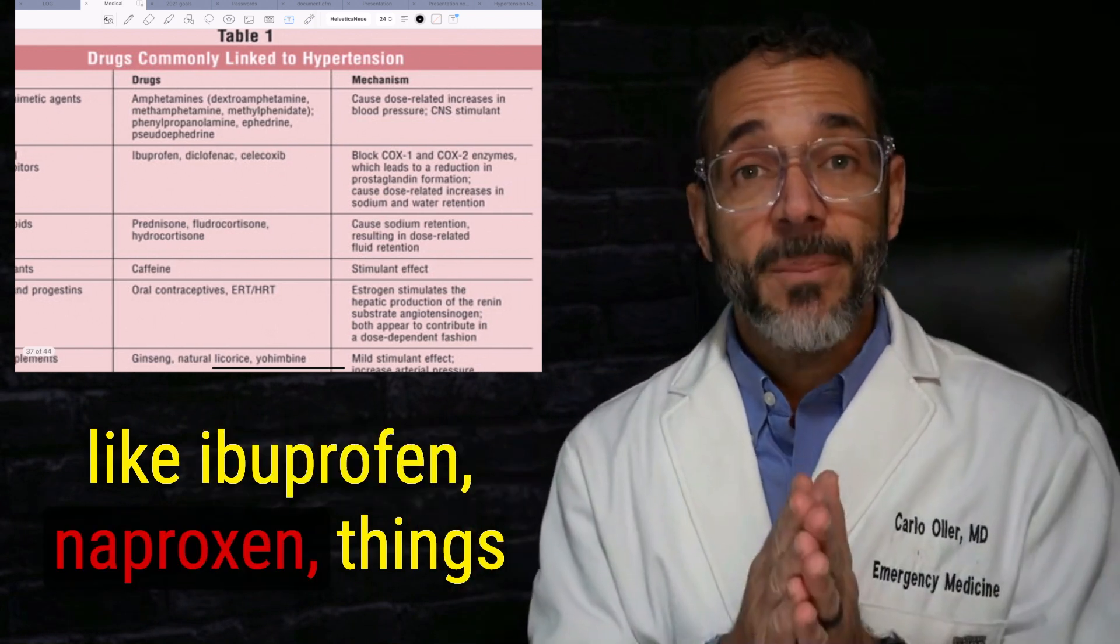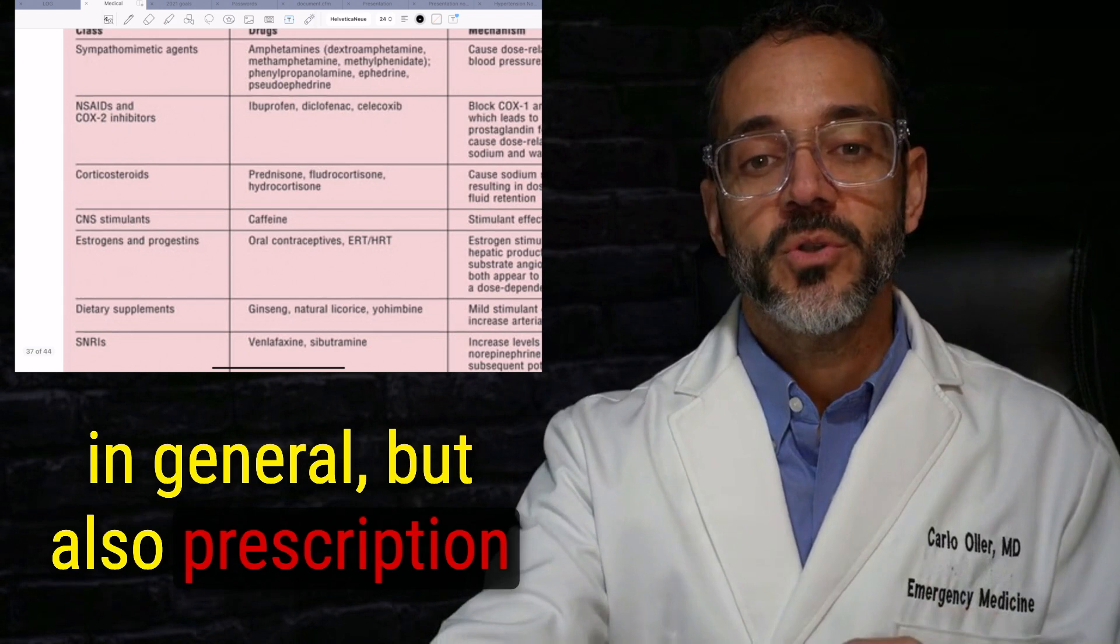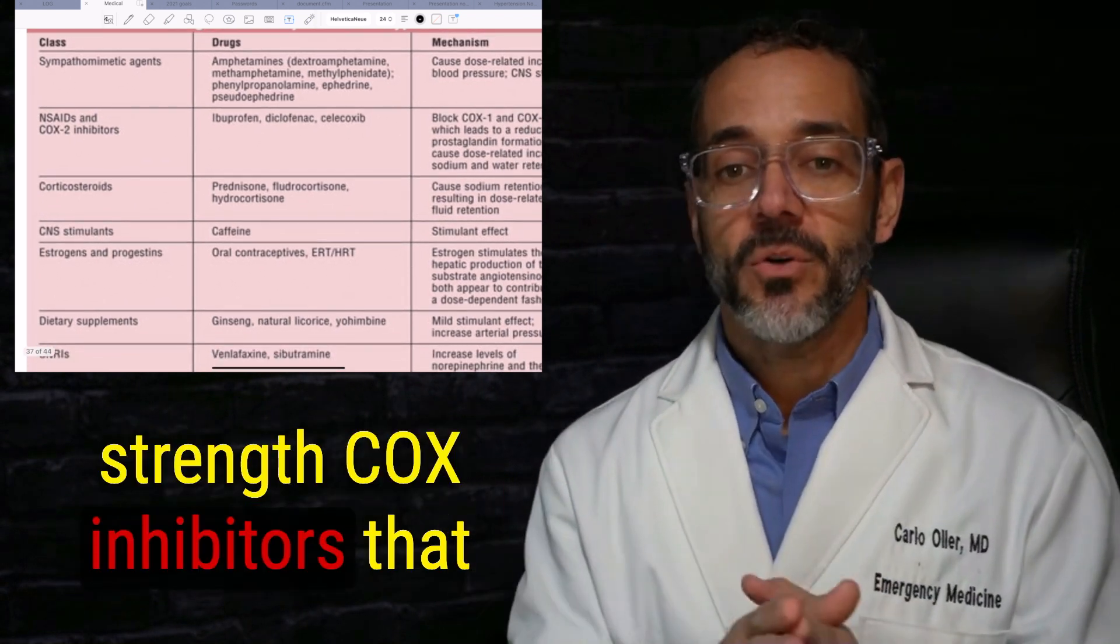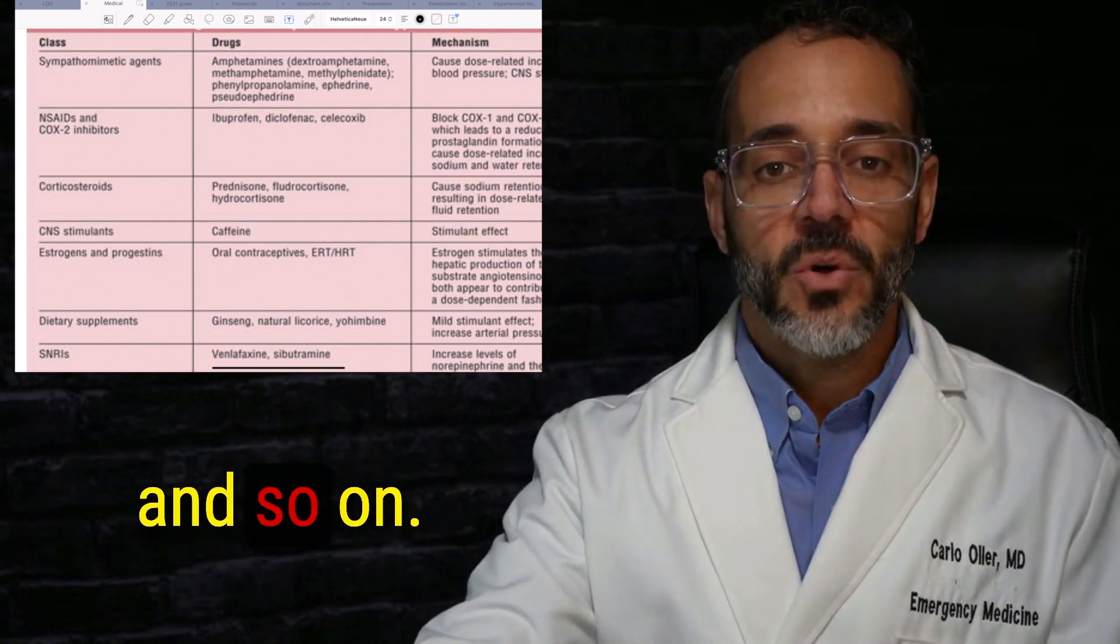Things that you wouldn't think about, like ibuprofen, naproxen, things that are over the counter, NSAIDs in general, but also prescription strength, COX inhibitors, that includes diclofenac, celecoxib, and so on.